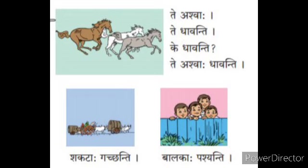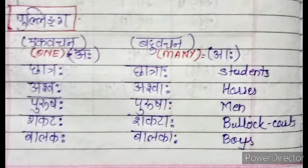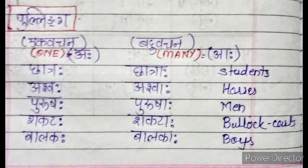Very good, children. Here we also learn about the plural form of words. In masculine — Pullingi: chhatraha, ashwaha, purushaha, shakataha, balakaha, et cetera.